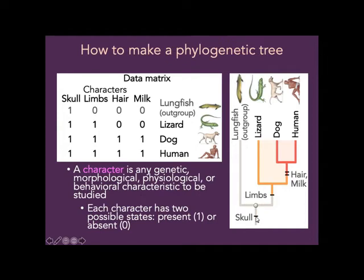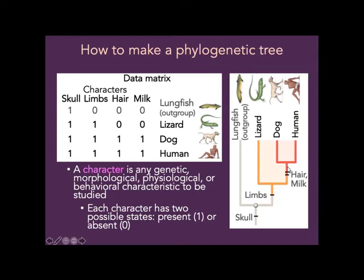I like to imagine driving a little car through the evolutionary tree. There's a mutation that occurs, it's beneficial and it spreads — so everyone from that point on has limbs. Then we get to another branching point and a speciation event occurs. One lineage gets mutations for hair and milk, so everyone from there on has hair and milk. The other lineage doesn't get that mutation, so no hair, no milk.